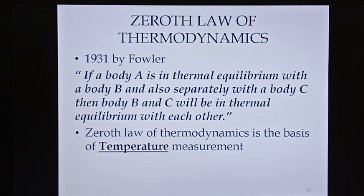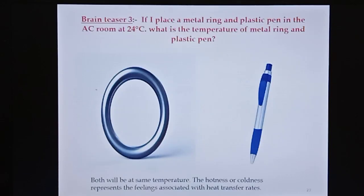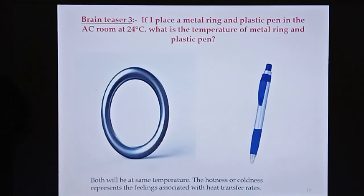Next comes the zeroth law of thermodynamics, defined by Fowler and scientists in 1931. The law states that if body A is in thermal equilibrium with body B, and also separately with body C, then body B and body C will also be in thermal equilibrium with each other. This zeroth law is the basis for temperature measurement. For example, a plastic pen and a metal ring in an AC room at 24 degrees Celsius are at the same temperature, even though the metal ring feels colder due to its higher thermal conductivity — that feeling is associated with heat transfer, not temperature itself.